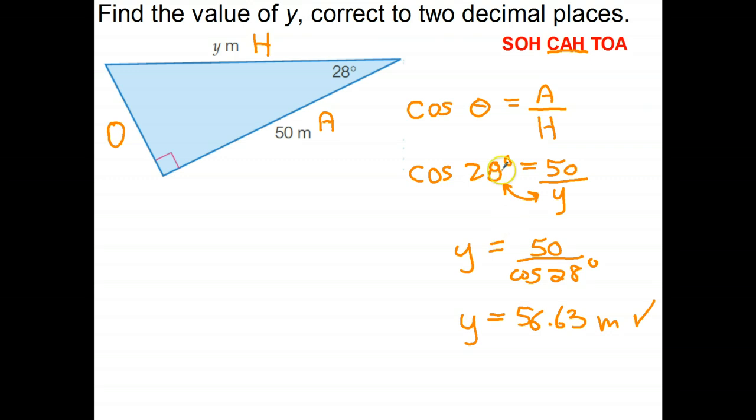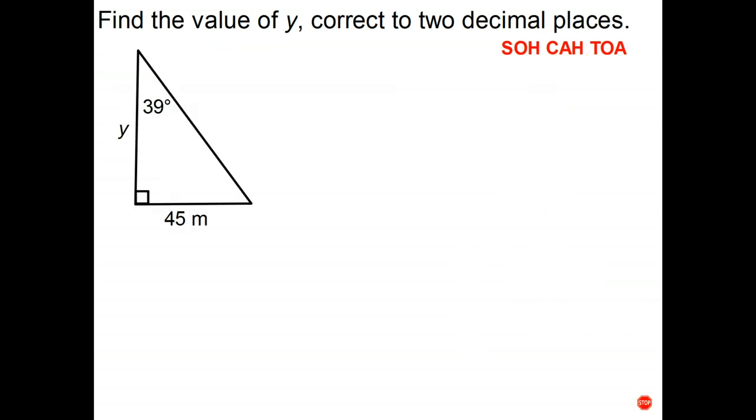So once again, if once you write your trig equation your variable or your unknown ends up on the bottom of a fraction, just use the sneaky swap and continue from there. Okay, I want you to go ahead and find y using that technique. Once you finish, stop the video, and when you finish come back and we'll go through the answer.